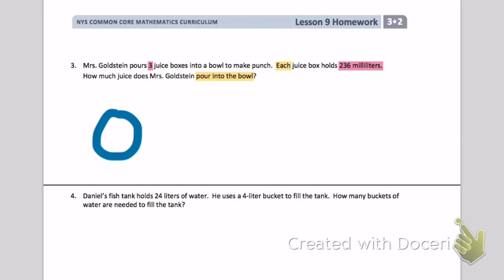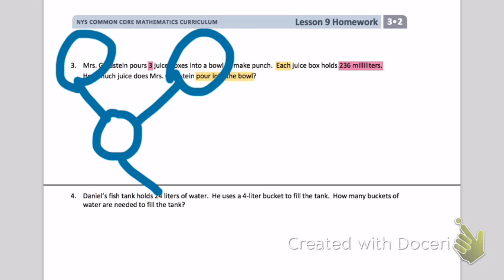So we're going to draw a tape diagram - I'm sorry, a number bond to help us with that. There's my three groups. In each of my groups, I'm going to put 236 milliliters.